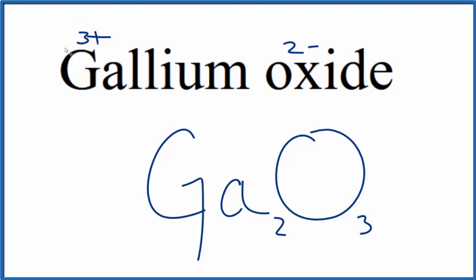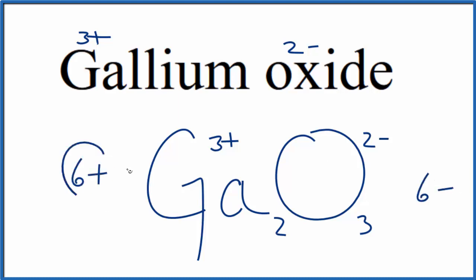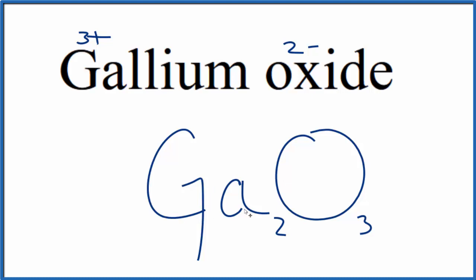This would also be the formula for gallium trioxide, since we have three oxygens, and for gallium three oxide because the three plus is where that Roman numeral three comes from. Let's check our work: gallium is three plus, oxygen is two minus. Three times two minus is six minus; two times three plus is six plus. These do add up to zero — a net charge of zero.